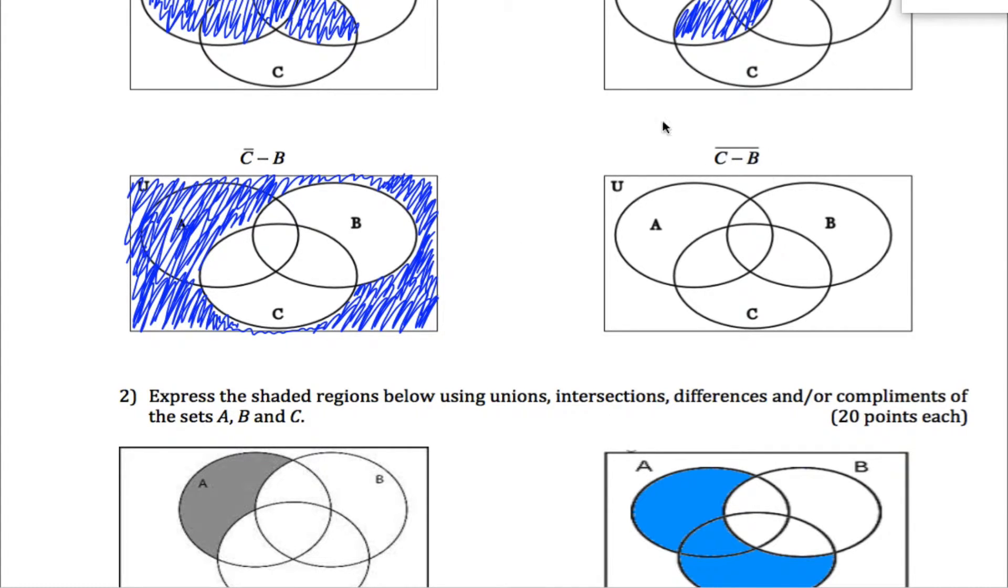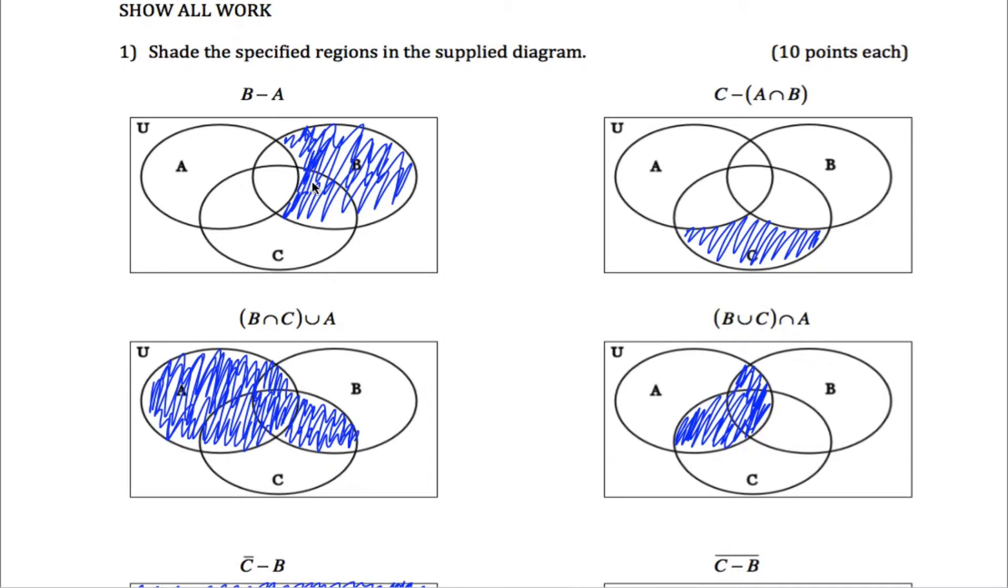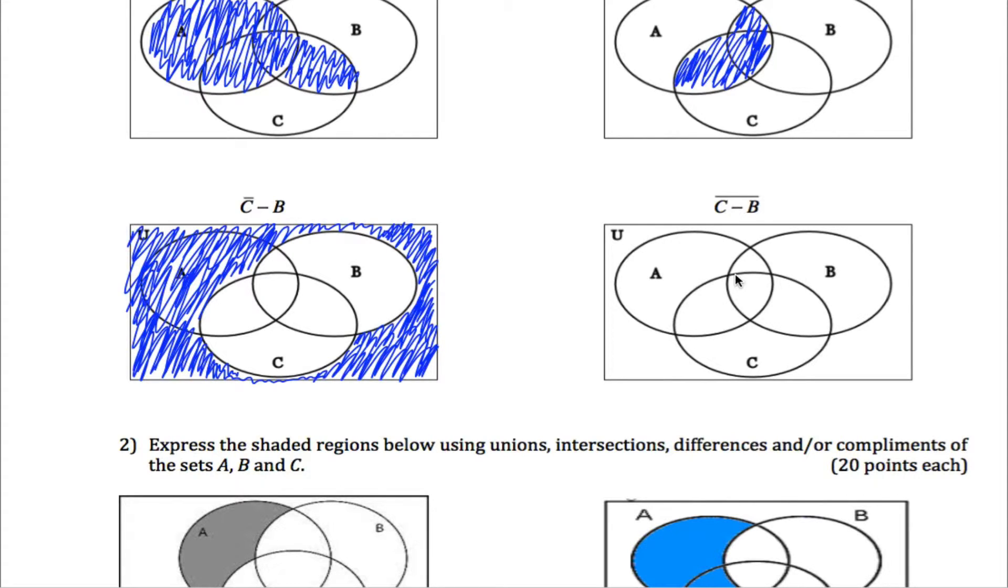C minus B, the complement of that. Well, we've done these differences before. We did B minus A, and the idea is you start out with all of B, then you erase anything that happens to fall in A. Over here, I'm going to start out with all of C, and then I'm going to erase anything that also happens to be in B. So if I just think about C minus B, what I'm talking about is this little crescent-shaped moon right here. This is C minus B.